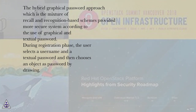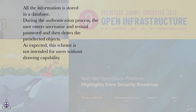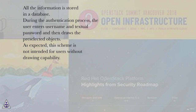During the registration phase, the user selects a username and a textual password, then chooses an object as a password by drawing it. All the information is stored in a database. During the authentication process, the user enters the username and textual password, then draws the pre-selected objects. As expected, this scheme is not intended for users without drawing capability.